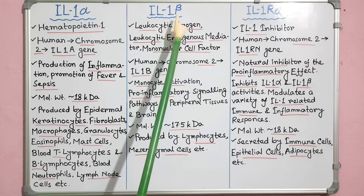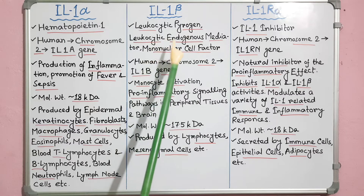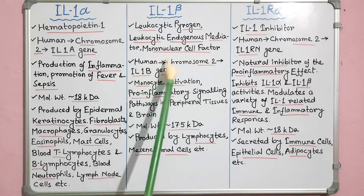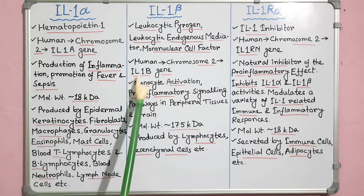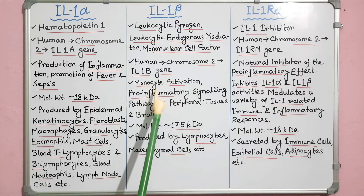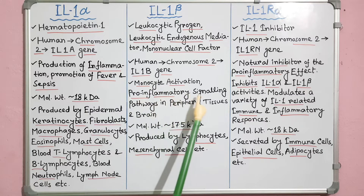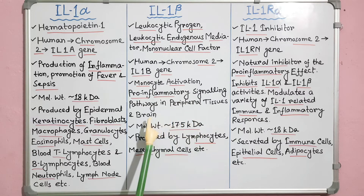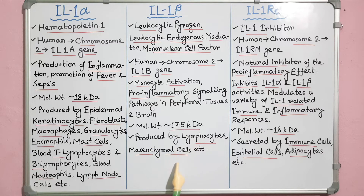Interleukin-1 beta, also known as leukocytic pyrogen, leukocytic endogenous mediator, mononuclear cell factor, etc. In humans, it is encoded by the IL-1B gene of chromosome 2. It is a major cytokine involved in monocyte activation and activation of pro-inflammatory signaling pathways in peripheral tissues and brain. Mature IL-1 beta is a 17.5 kilodalton protein. It is produced by lymphocytes, mesenchymal cells, etc.